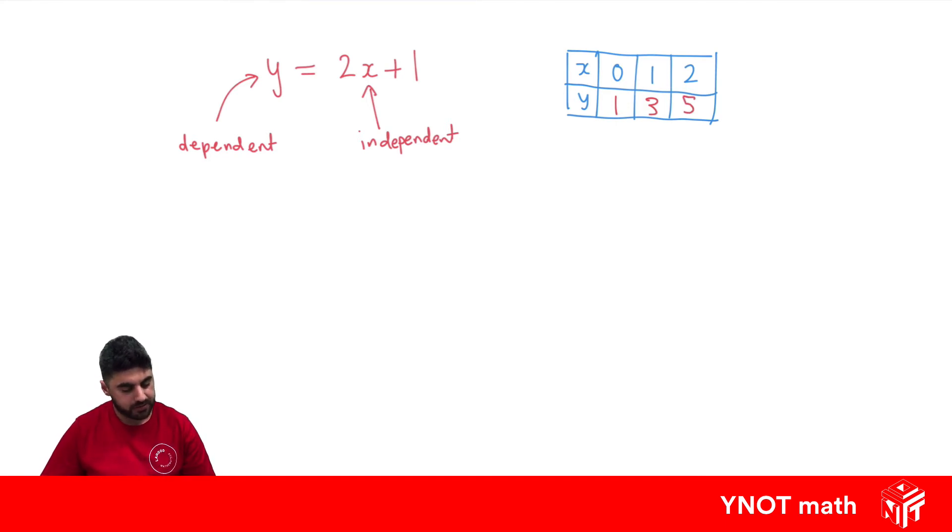And when we go to plot this out on a graph, on a number plane, we have x and y. And always, our x-axis is always where our independent variable goes, and our y-axis is where our dependent value goes.